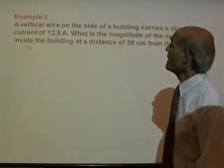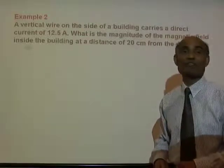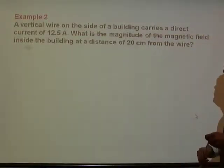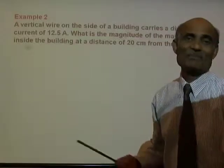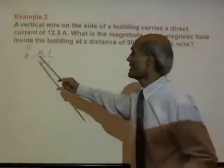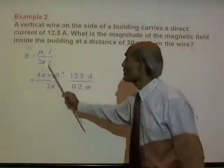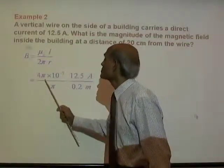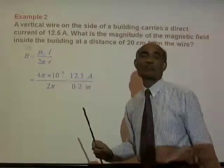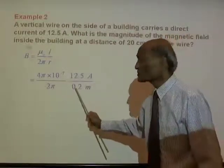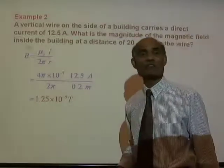A vertical wire carries a downward current of 12.5 ampere. What is the magnitude of the magnetic field at a distance of 20 centimeters from the wire? Using B equals mu_0 over 2 pi times I over r, with mu_0 equals 4 pi times 10^-7, I equals 12.5 ampere, and r equals 0.2 meter, that gives 1.25 times 10 to the negative 5 tesla.